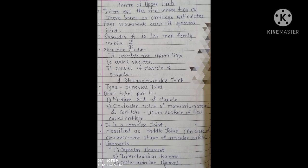The first joint is the sternoclavicular joint. It is a synovial type of joint. Bones that take part are the medial end of the clavicle, the clavicular notch of the manubrium sterni, and the upper surface of the first costal cartilage. It is a complex joint classified as a saddle joint because of the concave and convex shape of the articular surface. Ligaments are the capsular ligament, interclavicular ligament, and costoclavicular ligament.